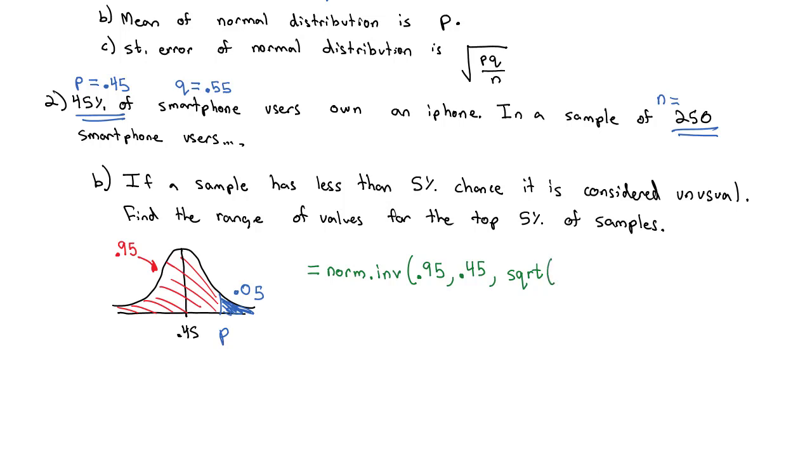Our P proportion of 0.45, times 0.55, divided by N, which is 250. Close the parenthesis on the square root, close the parenthesis on the normal inverse command, and when we type this into the calculator, we'll find that the proportion is 0.5010.